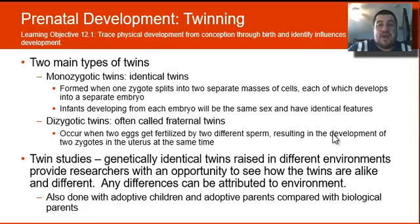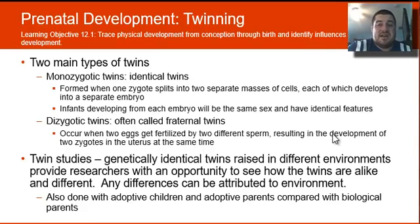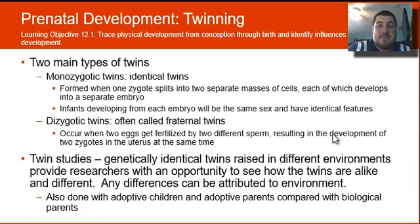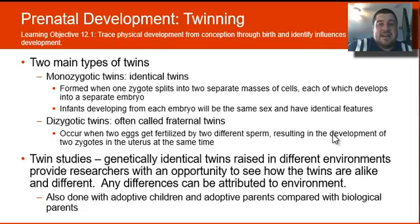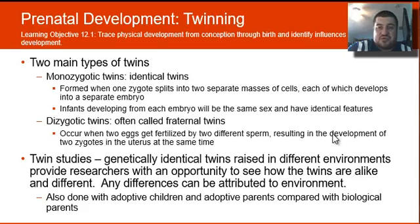There are basically two main types of twins: monozygotic, or identical twins, and dizygotic, which you might know as fraternal twins. Monozygotic twins form when one zygote splits into two separate masses, and these masses each develop into a separate embryo — so infants developing from the same embryo will have the same sex and the exact same heredity. Dizygotic, or fraternal twins, means two eggs get fertilized by two separate sperm, resulting in two zygotes in the uterus at the same time — there's no splitting in dizygotic.